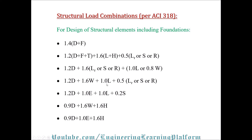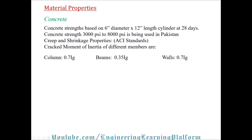Material properties: concrete strength is based on a 6×12 inch cylinder at 28 days. Concrete strength of 3,000 to 8,000 psi is used in Pakistan, UAE, and the United States. Cracked moment of inertia per ACI standards for software modeling is 0.70 of gross moment of inertia for columns, 0.35 for beams, and 0.70 for shear walls.